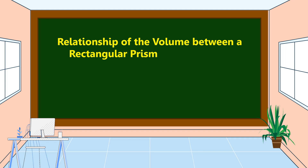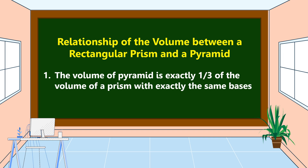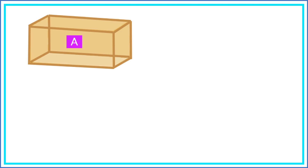The relationship of the volume between a rectangular prism and a pyramid: the volume of a pyramid is exactly one-third of the volume of a prism with exactly the same base and height. To understand fully the relationship, let's discuss with an illustration. This is a rectangular prism — the bottom is in the shape of a rectangle and all other surfaces are rectangles too.